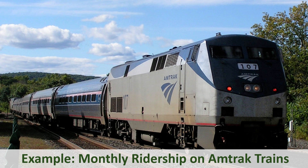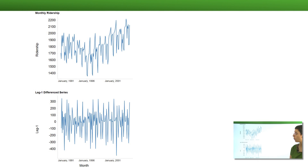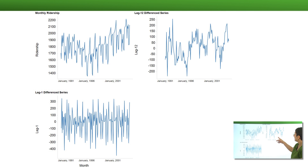Let's see an example of differencing a time series. Recall the series of monthly ridership on Amtrak trains. By now, you probably remember that the series exhibits both a trend and seasonality. So let's try to remove these two components by differencing. Here's the raw series. We can take a lag one difference, and the resulting series will no longer display the trend. We can also take a lag 12 difference, and we see that the 12-month seasonality is gone, but the trend remains.